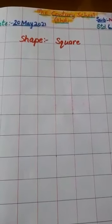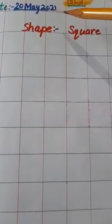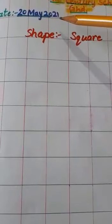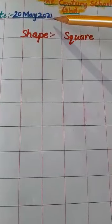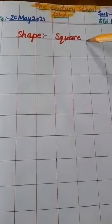Very good morning students. How are you? Dear students, today is Thursday and date is 20th May 2021. This is your maths class. Today we will draw a shape square.